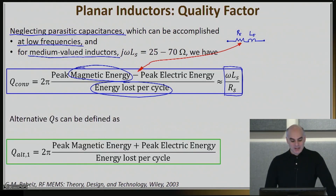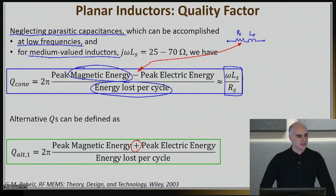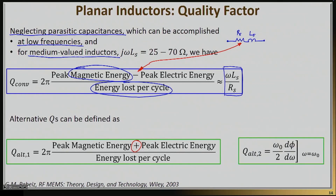Some people will define the Q of the inductor exactly the same way as the Q for a resonator — taking magnetic energy plus electric energy, giving a different Q. Yet others, trained differently, use the Q equation from linear systems, defined around the resonance frequency of a resonant system, looking at how the phase changes around resonance. That is a third definition for Q. The complexity arises because the vast majority of published papers do not specify which Q definition they have used.